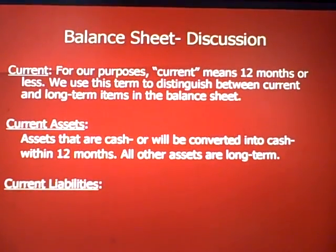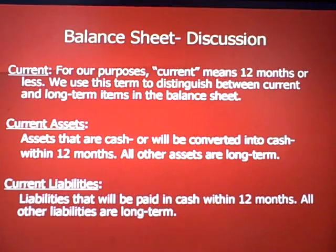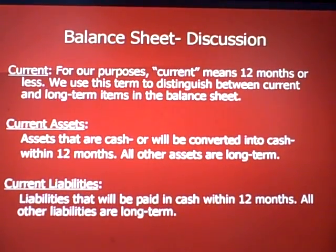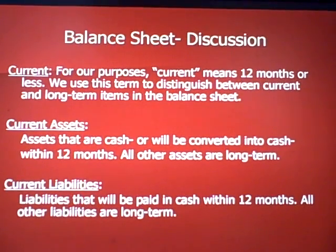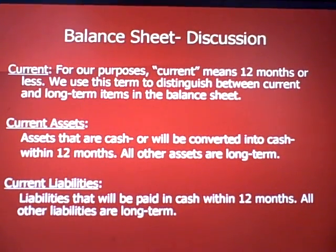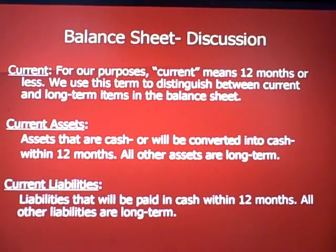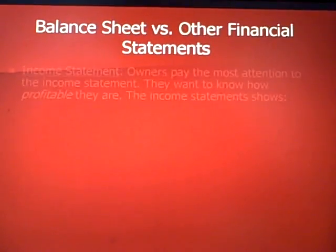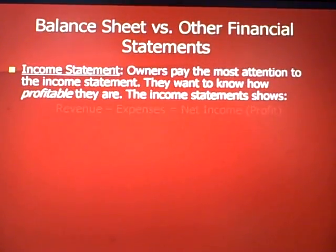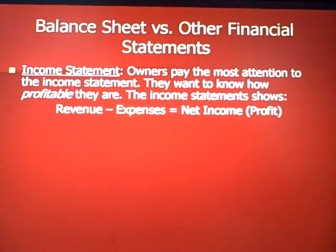On the liability side, liabilities that will be paid in cash within 12 months are current; all other liabilities are long-term. For example, a loan on a vehicle where you're not paying it off within 12 months would be a long-term liability.